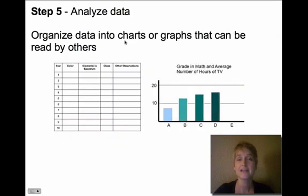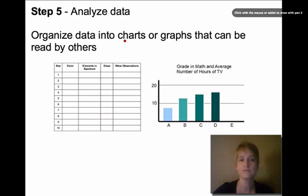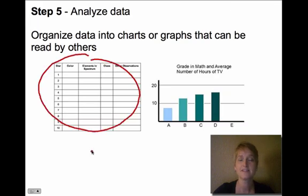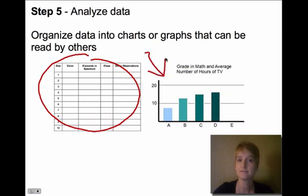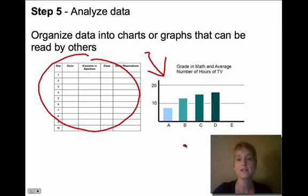The next step is to analyze the data. We organize the data into charts or graphs that can be easily read. A table or chart is often made before the experiment so we have a place to record information while collecting data. A graph is done after the experiment — after we have all of that data, we put it into graph form so it's visual and people can easily see what your results were.